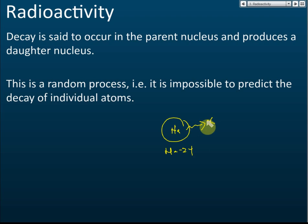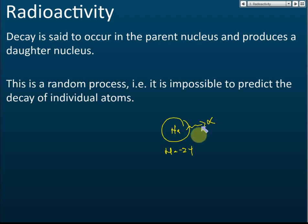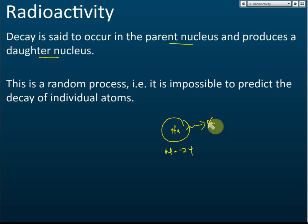Before the radioactive emissions occur, the nucleus is called the parent nucleus. After it has released the radioactive emissions, it becomes the daughter nucleus.